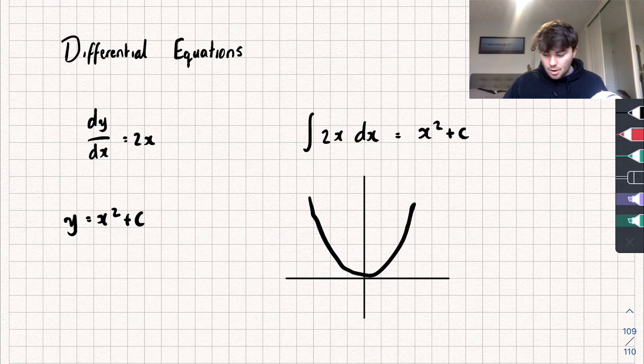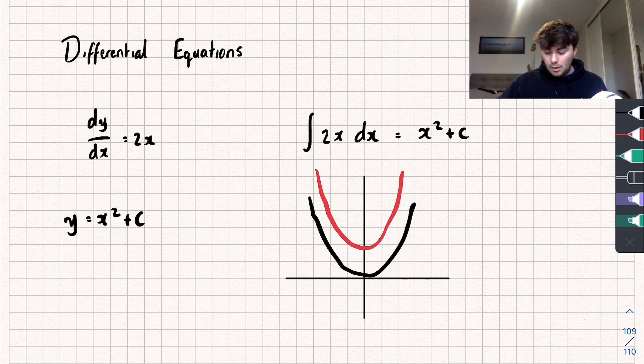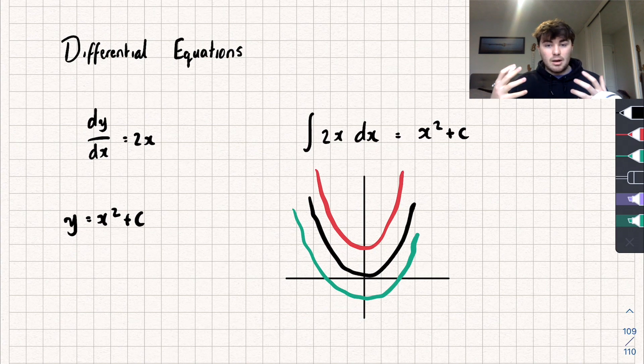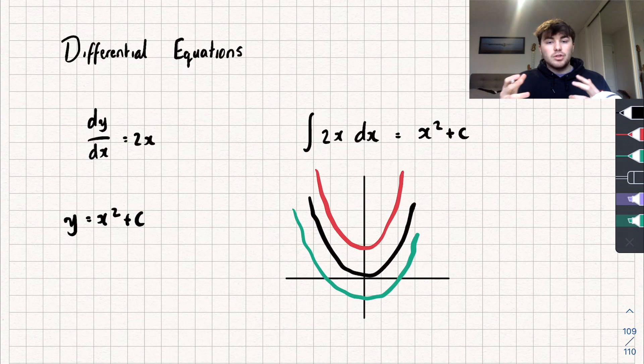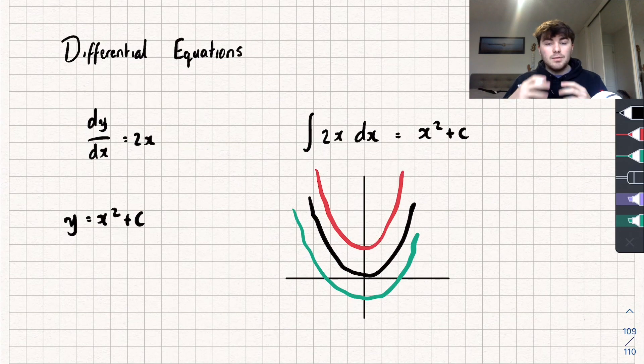We get different parabolas and this would be a family of solutions that I've sketched. Obviously there are infinitely many but I'm just going to sketch a few of them. So that is our general solution. How do we find a particular solution?